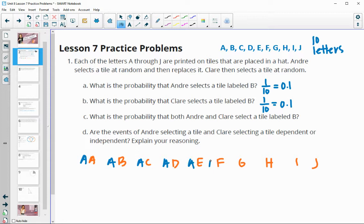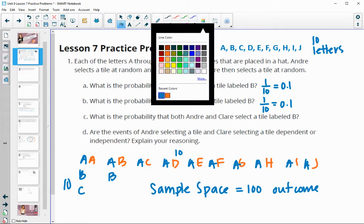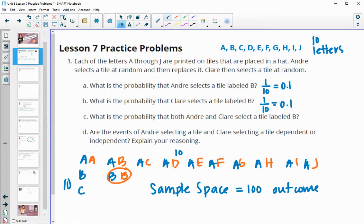So our sample space would look something like this just for the first letter being an A. Then we would repeat this and we'd have for the B and then we'd have each of the options, C each of the options. So we'd have 10 choices here and 10 here, so there's going to be a sample space of 100 outcomes. And then only one of those is going to have the option where they both chose B. So that's going to be a 1 in 100 chance, which would be a 0.01.